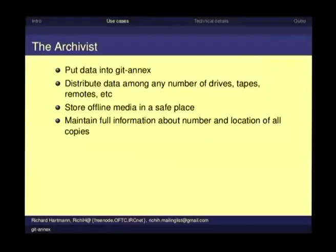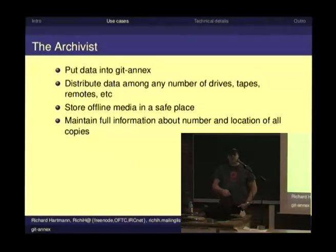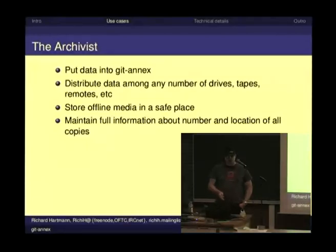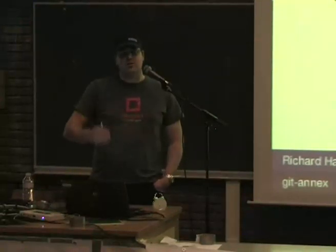Let's get to some use cases. There are three major use cases usually used to present the value of JIT Annex. The first one would be the Archivist. He or she just puts everything into an Annex or several Annexes, depending on how you use it. You can then distribute the data among whichever media you want — tape, disk, different computers, anything. You can then simply pull some or all of these media from your computers and store them offline, in a bank vault, wherever. You will still have all the information about the actual location of your data in each and every repository.